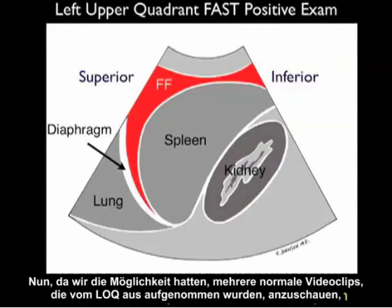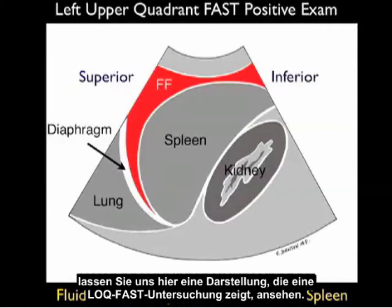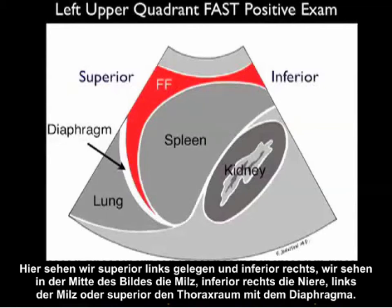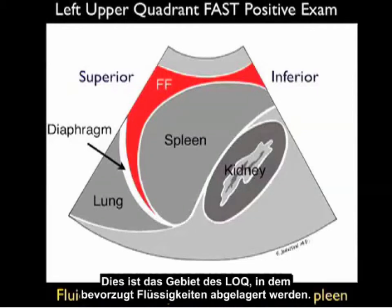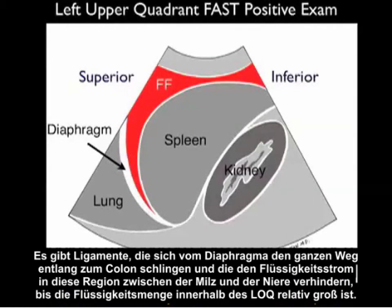Now let's look at a pictorial showing a positive left upper quadrant FAST exam. Superior is to the left, inferior to the right; we see the spleen in the middle, the kidney inferiorly, and the thoracic cavity with the diaphragm superior to the spleen. Fresh fluid — demarcated by orange — layers out predominantly below the diaphragm and above the spleen, which is where fluid preferentially deposits. Ligaments that sling from the diaphragm to the colon prevent fluid from flowing into the splenorenal space until the fluid volume is relatively large.